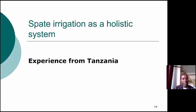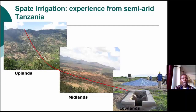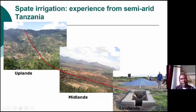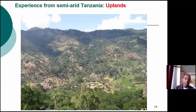I prefer to talk about the experience from Tanzania — spate irrigation from the Tanzanian perspective. If we talk of the Makanya subcatchment, we have three toposequences: the upland area, which receives lots of rainfall; the midland areas, where people are more interested in conserving both water and soil; while in the uplands, the main focus is soil conservation, not water, because water is plentiful. In the lowland, land is not an issue — moisture is. So their main focus is conservation of soil moisture.